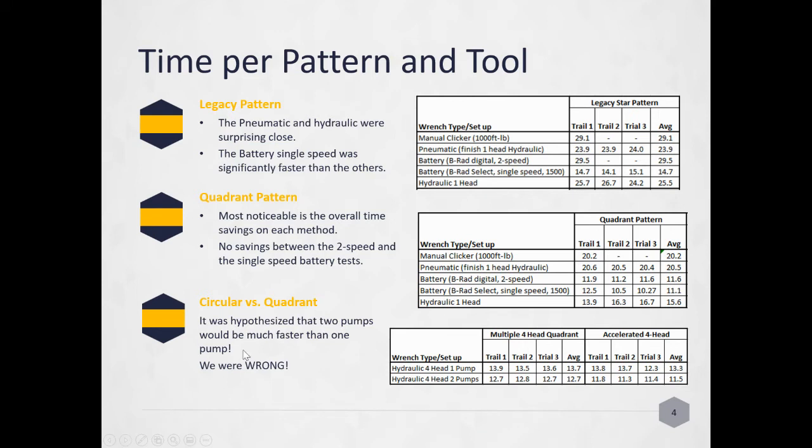Then circular versus quadrant. It was hypothesized that with two pumps it'd be much faster than one pump. We were wrong. You really didn't save any more time with either one as you did with one, only a couple minutes. Our theory is the hydraulic pump moves only one head at a time, it doesn't move all four. That two minutes is from tool movement, not because of the pump.